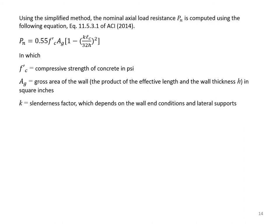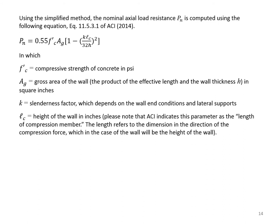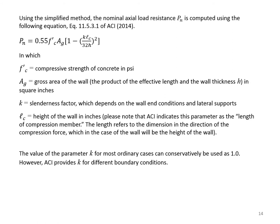K is the slenderness factor, which depends on wall conditions and lateral supports. Lc is the height of the wall in inches—ACI calls this the length of the compression member. The value of K for most ordinary cases can conservatively be taken as 1; however, ACI provides K for different boundary conditions.